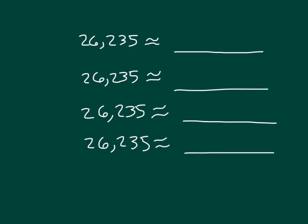Let's take a look at 26,235. We're going to round it to different places. For this first one, let's round 26,235 to the greatest place, or to the nearest 10,000. Is it closer to 2 ten-thousands or 3 ten-thousands? The midway point is 25,000, so it's actually closer to the upper endpoint, or 30,000.